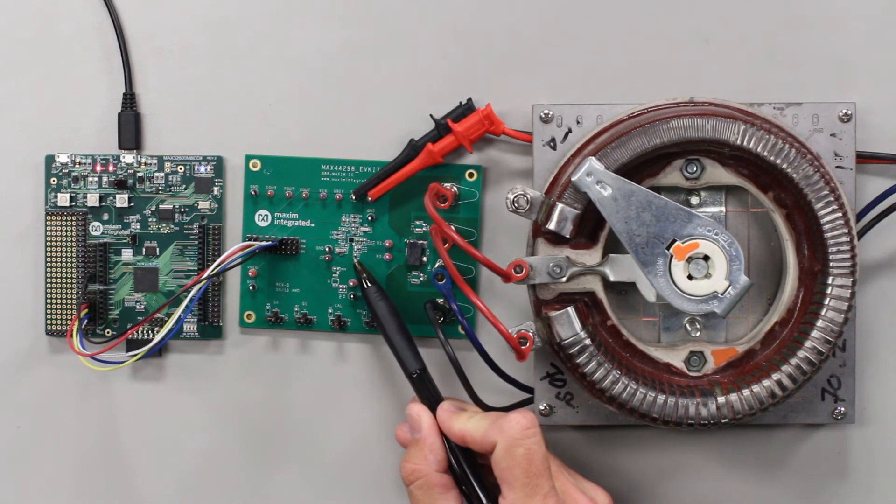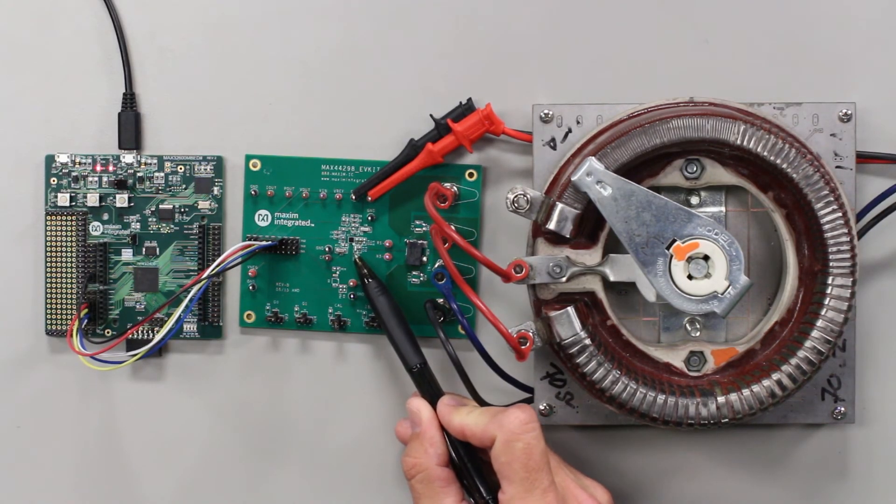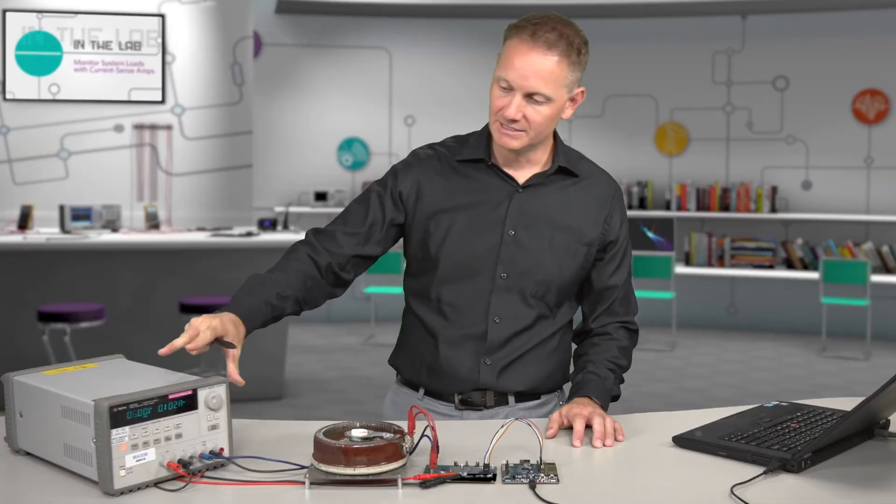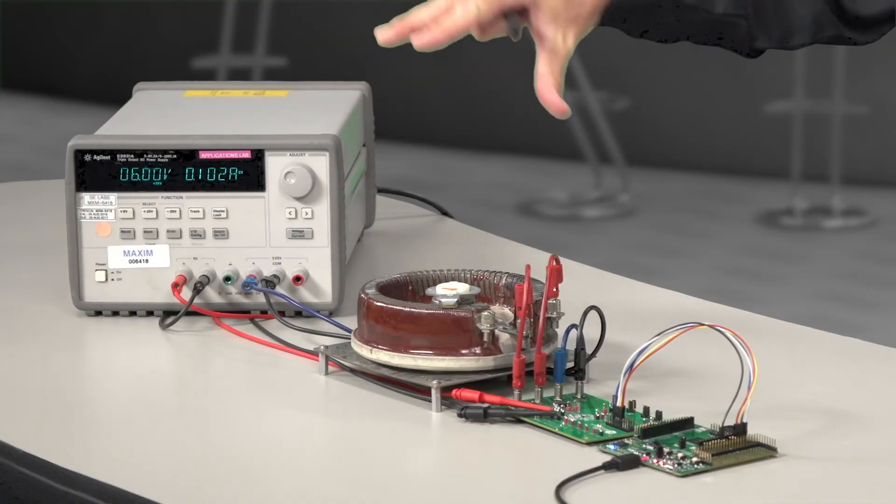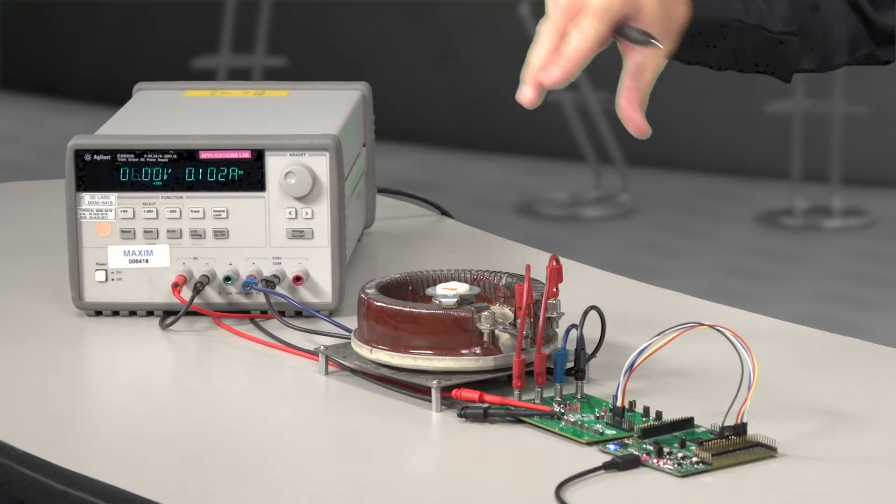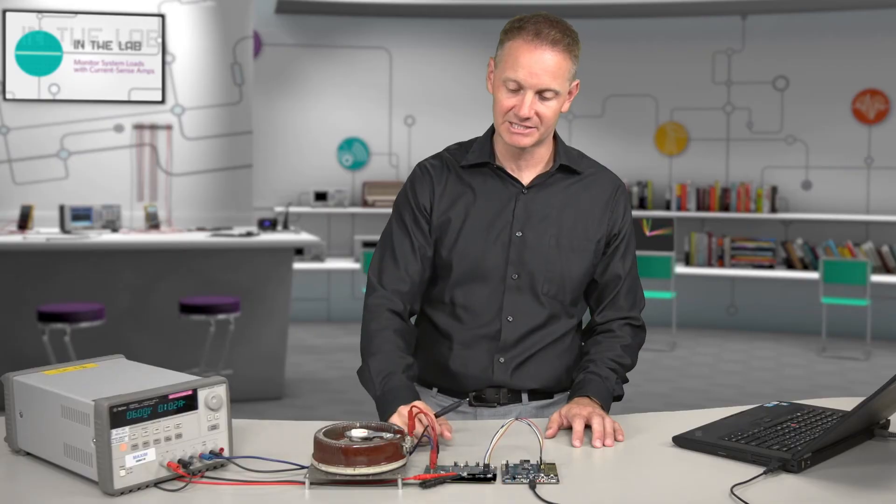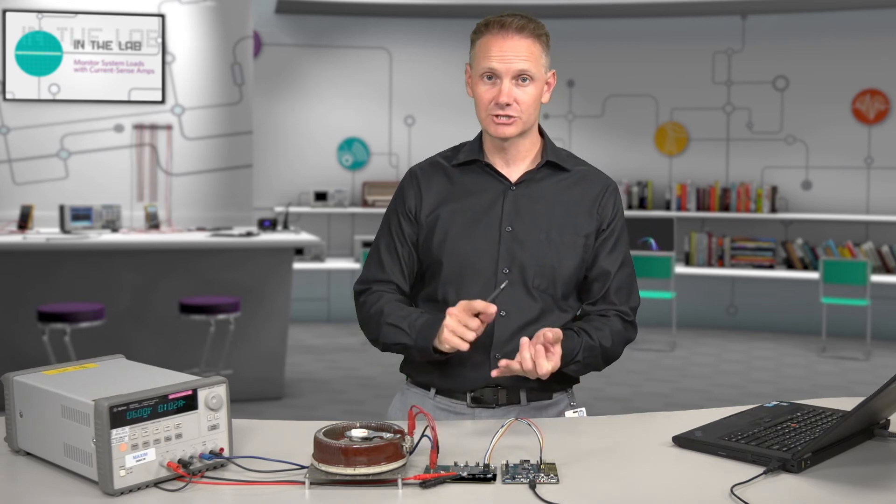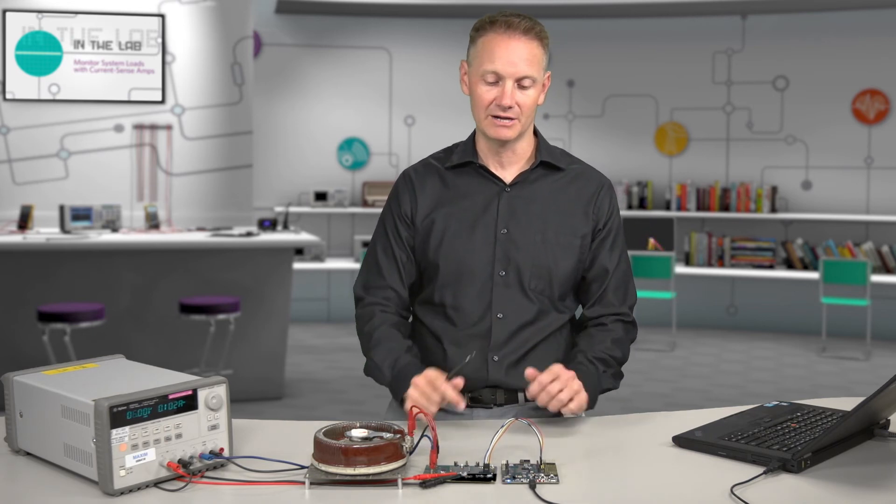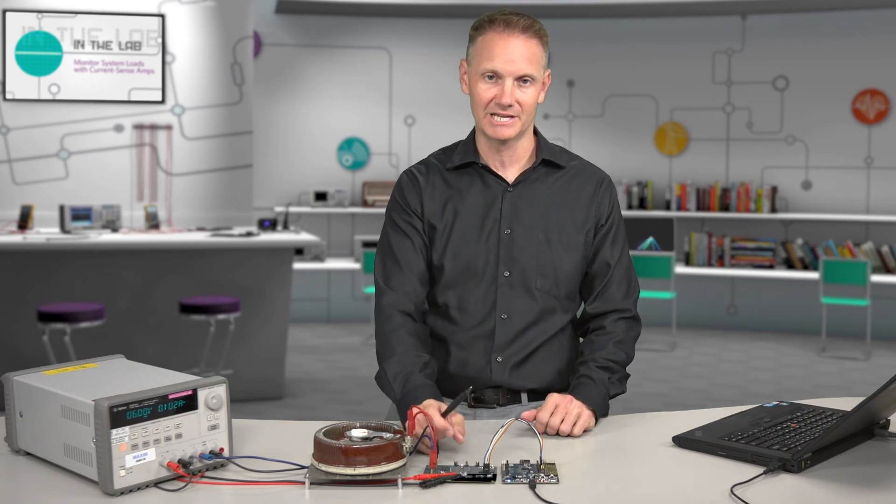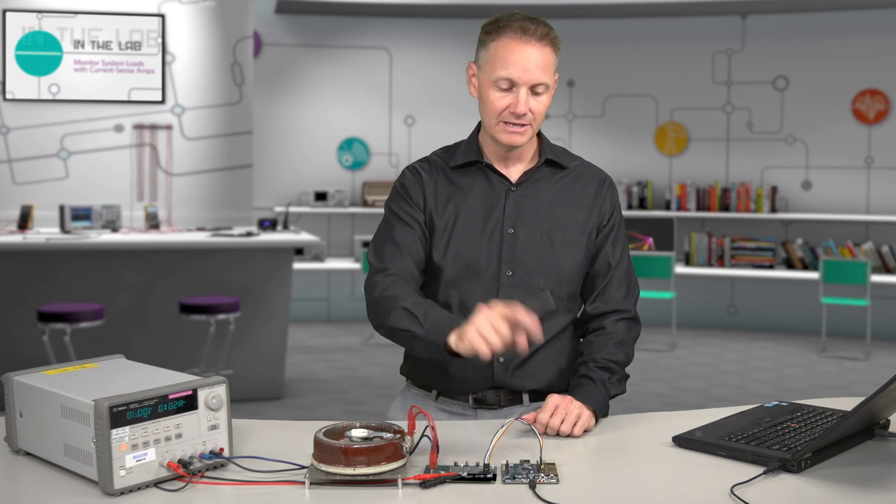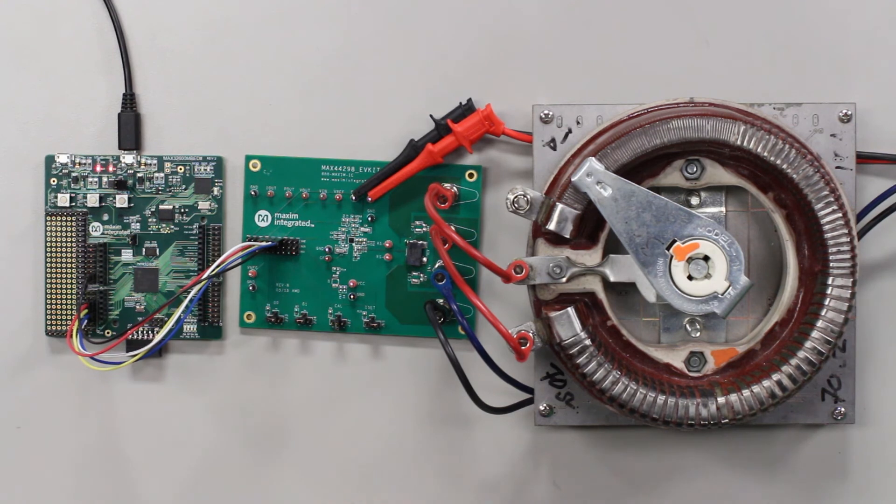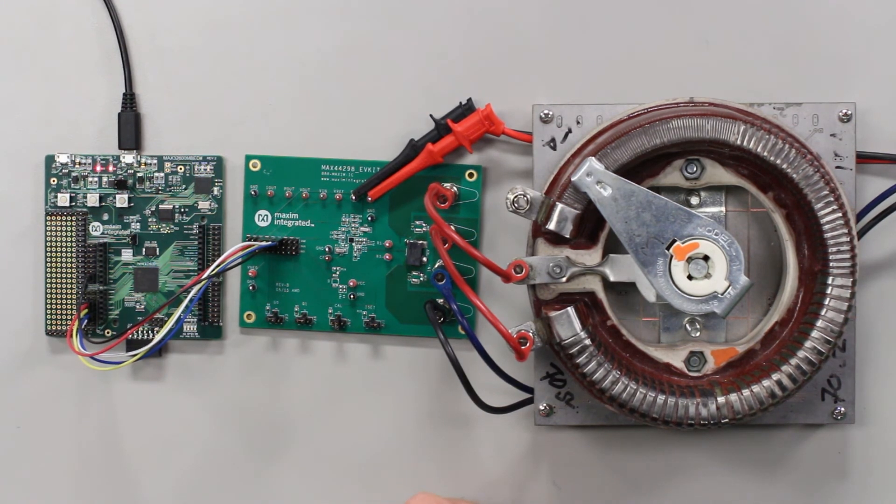So this is the MAX44298 EV kit here. You can see the part right here. And what we've done is hooked up a power supply into a big resistive load which then feeds the sense resistor on the MAX44298 which is a low side power monitor. From there we take the voltage, current, power, and reference output readings. You get all these readings out of the MAX44298 power monitor into our MAX32600 microcontroller EV kit board.